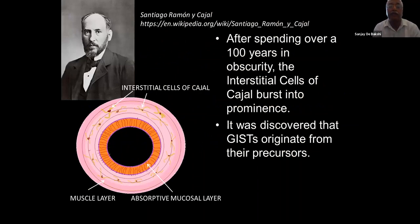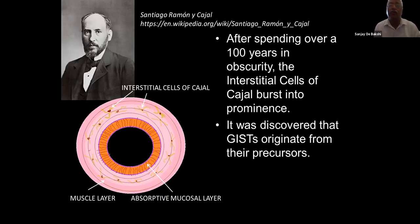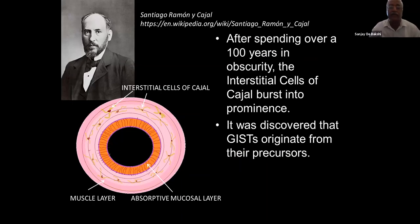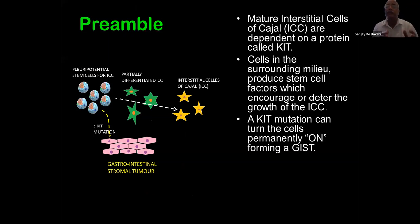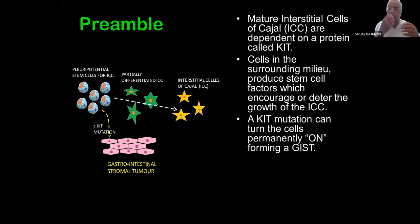Santiago Ramón y Cajal discovered the interstitial cells. After spending about a hundred years in obscurity, these cells suddenly became relevant when it was understood why GISTs originate from their precursors. The mature interstitial cells of Cajal are dependent on a protein called KIT in the surrounding milieu — tumor cells take input from their surroundings. The surrounding milieu produces a stem cell factor which can encourage or deter the growth of ICC. A KIT mutation can turn these cells permanently on, forming GISTs.